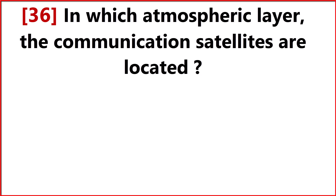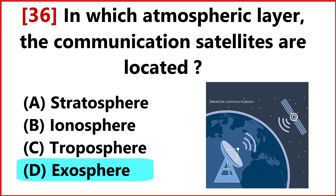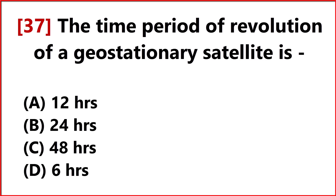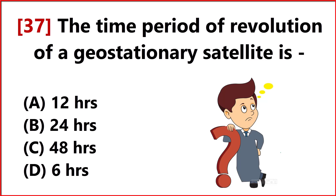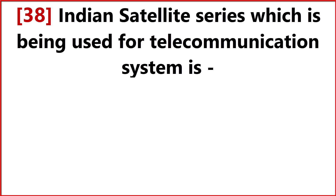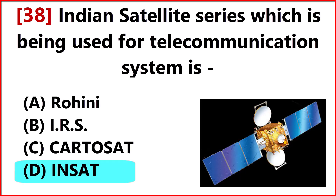In which atmospheric layer are communication satellites located? Answer Option D: Exosphere. The time period of revolution of a geostationary satellite is Answer Option B: 24 hours. The Indian satellite series used for the telecommunication system is Answer Option D: INSAT.